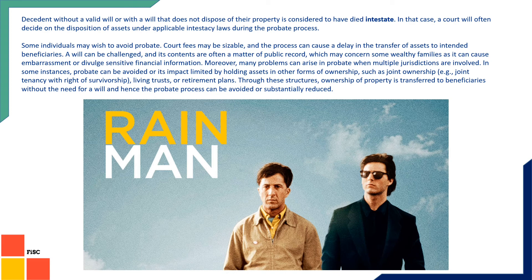Many times individuals try to avoid this probate process because it is costly and it is going to impact the reputation of the family. That's why they try to do some out-of-court settlement. Sometimes a person is very prepared even before his death — he has some kind of joint ownership of assets where the survivor, maybe his son or wife, would get the property. Otherwise, he may have a trust with its own rules on how property should pass from one person to another, or there could be a retirement plan. In all these cases, the probate process could be avoided or substantially reduced.